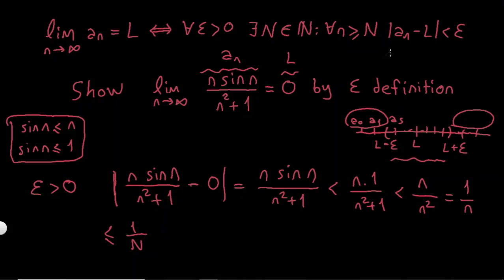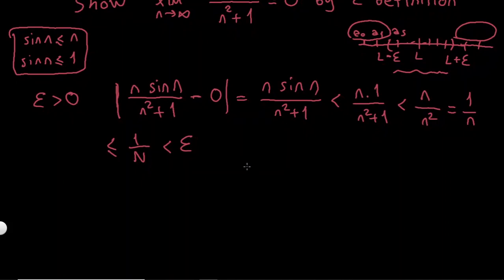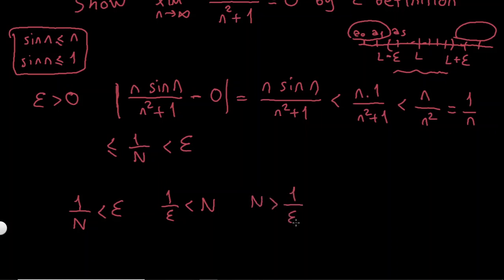Now I have something as a function of capital N, and my goal is to have |aₙ - l| less than epsilon. So if I say 1/N is less than epsilon and multiply both sides by N/epsilon, I get 1/epsilon less than N — in other words, N greater than 1/epsilon. So if I take N equal to 1/epsilon, I am almost done.